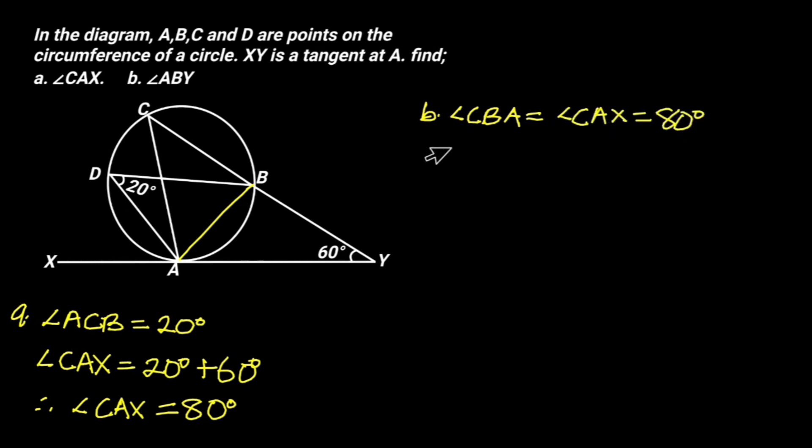Reason: angle in alternate segment. Therefore, angle ABY is equal to 180 degrees minus 80 degrees, which is equal to 100 degrees.